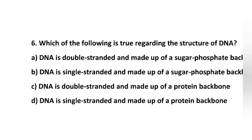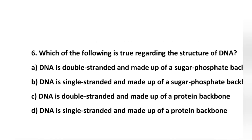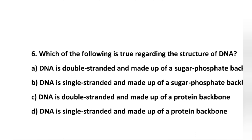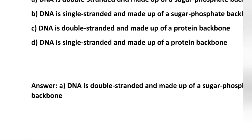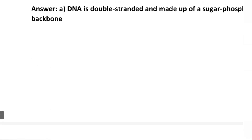Number 6: Which of the following is true regarding the structure of DNA? Option A: DNA is double stranded and made up of sugar phosphate backbone. Option B: DNA is single stranded and made up of sugar phosphate backbone. Option C: DNA is double stranded and made up of a protein backbone. Option D: DNA is single stranded and made up of protein backbone. The correct answer is option A: DNA is double stranded and made up of sugar phosphate backbone.